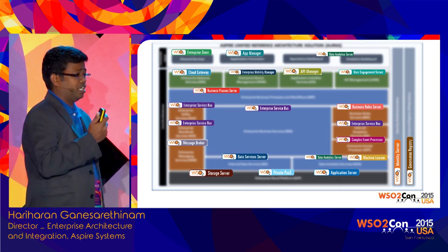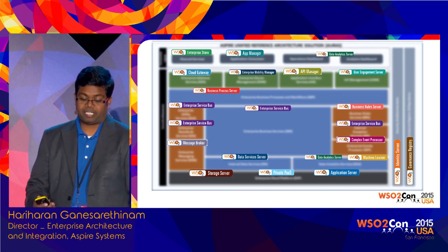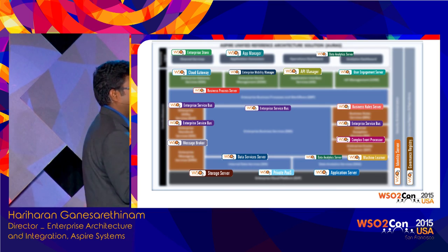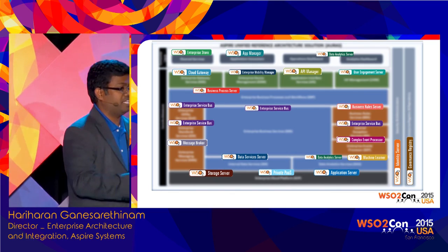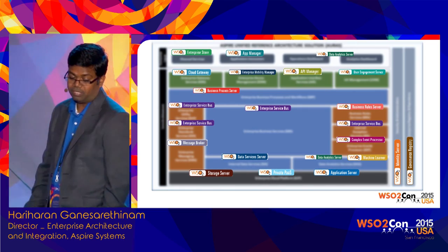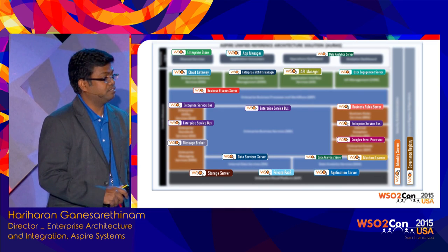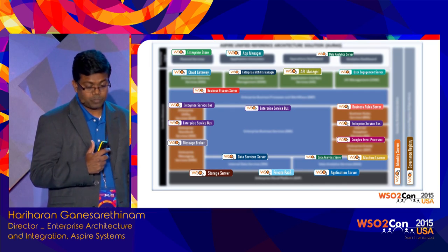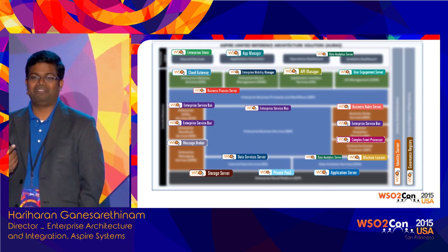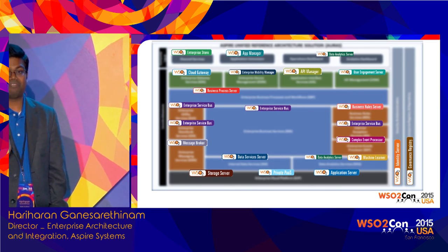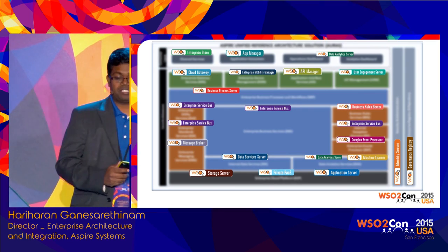We have the integration layer with different products. The processing layer has different products — business processes, separation of business rules, and complex event processing from the data analytics aspect. We have the analytical server capability as well. On top of that, we have mobility, cloud gateway, API management, and user experience. The external level covers operational and business reports, application consumption, and store-level access. Finally, wrapping everything with governance and identity server — this is very important. We can create many services, but if we can't manage the lifecycle of those services, we end up with ad hoc services, which is going back to the old age. We need governance and identity server to control and consume services.